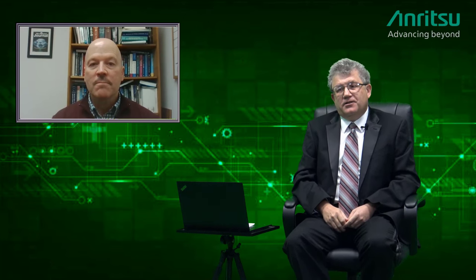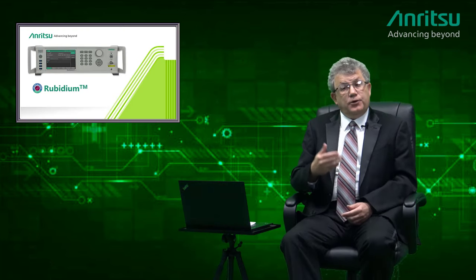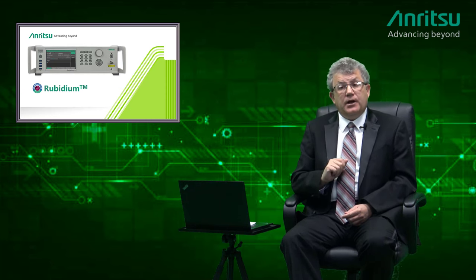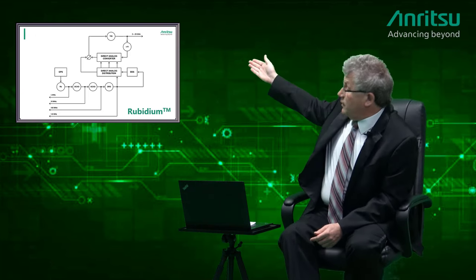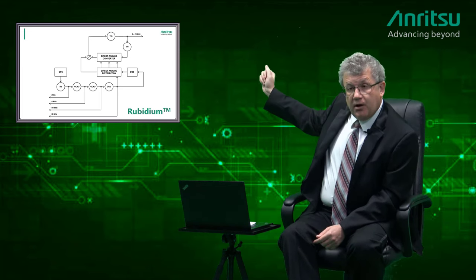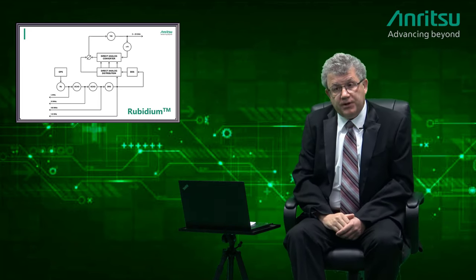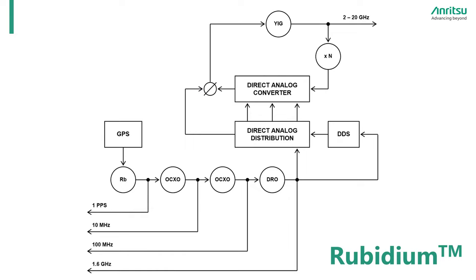Can we dive deeper into the detail? What method did you use? To answer that, let's evaluate a very simplified block diagram of the Rubidium synthesizer core. The main component here is a broadband YIG oscillator that covers the 2 to 20 GHz frequency range with very low noise at high offsets.